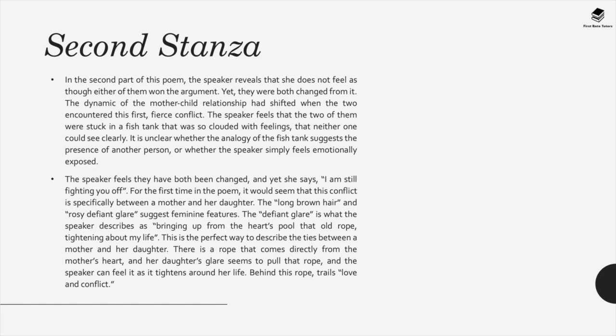In the second stanza, the speaker reveals that neither of them felt they had won, but both were changed. They seem stuck in a fish tank clouded with feelings. The speaker says 'I'm still fighting you off.' For the first time it's clear this is a mother-daughter conflict — the child's 'long round hair and rosy defiant glare' suggests feminine features. This defiant glare brings up from the heart 'that old rope tightening about my life' — a perfect image of the ties between mother and daughter.